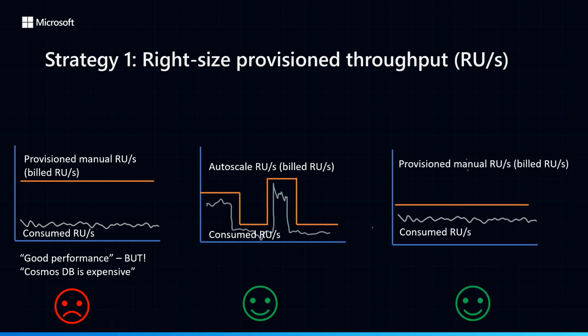At the same time, if you have a workload that is extremely steady and constant, you may benefit from using manual-provisioned RUs. Even with manual-provisioned RUs, it's still important to lower your RUs as close to what you're actually consuming to get the best cost performance. Intuitively, most customers can have a sense of if their workload is super steady or very variable, but in terms of actually choosing whether autoscale or manual is the right setting for your containers and which one helps you achieve the best cost, I can show you some tactics to systematically analyze that now.